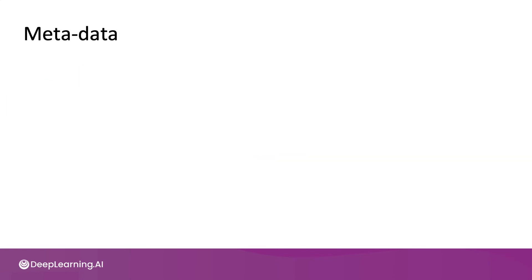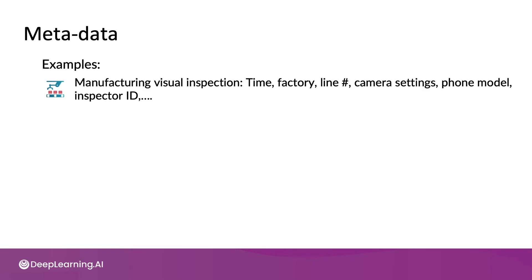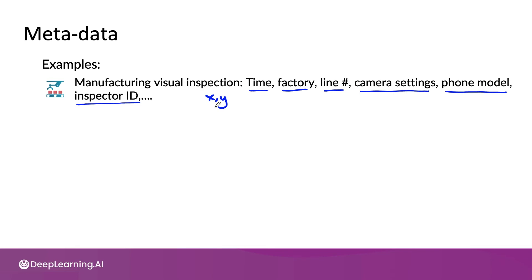One tip I want to share is to make extensive use of metadata. Metadata is data about data. For example, in manufacturing visual inspection, the data would be the pictures of phones and the labels. But if you have metadata that tells you at what time a picture of a phone was taken, what factory it was from, what the line number was, what the camera settings were such as exposure time and aperture, what the phone number being inspected is, and what the ID of the inspector who provided the label is — these are examples of data about your dataset X and Y, and this type of metadata can turn out to be really useful.